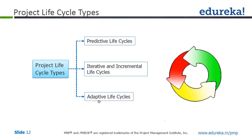In predictive life cycle, some iterations will happen even in predictive life cycle, but essentially predictive life cycle is used when you have the industry standard and practice already in place, you have sufficient knowledge of that industry and that kind of product. So the scope is very clear, and that's when you use the predictive life cycle.